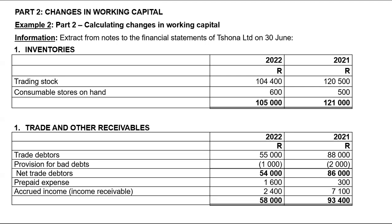There's also interest on a fixed deposit — interest income must also be shown separately on the face of the cash flow statement. I haven't seen a question where this came up, and even when I was at the Department of Education, I never came across an example where they gave you interest on a fixed deposit and you had to show it separately on the face of the cash flow statement.